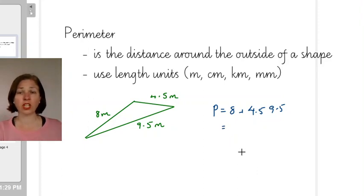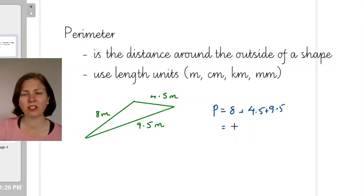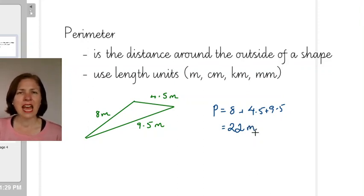So I added 8 and 4.5 and 9.5 and that's going to get me the perimeter. So now I just have to do it. So 4.5 and 9.5 is going to give me 14 plus 8 is going to give me 22.